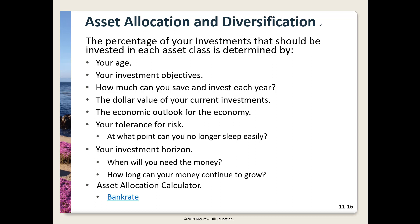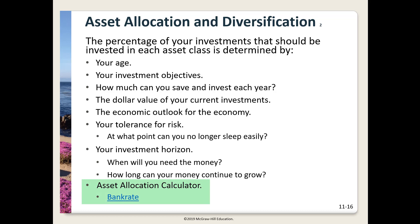Items to consider in determining your asset allocation include your age. Common guidelines say invest 100 or 110 minus your age as a percentage in stocks — when you're younger you can afford the risk, and your portfolio has time to recover. As you get older, a lower percentage in stocks makes sense. Also consider your objectives, how much you can invest now and add each year, the economic outlook, your tolerance for risk, and your investment horizon — when will you need the money.